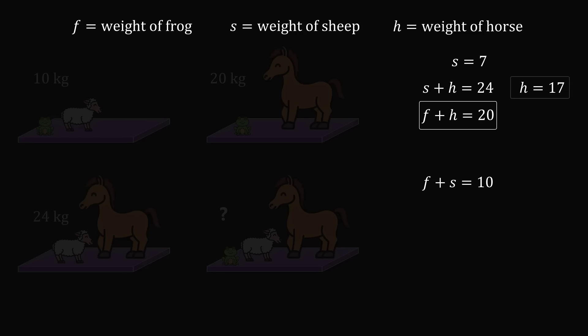We know the weight of the horse is 17, and the combined weight with the frog is 20, which means the weight of the frog will be equal to 3.